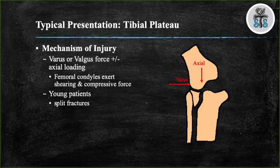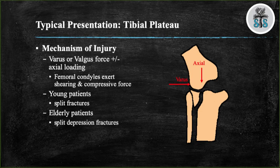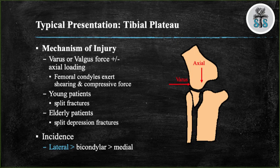Younger patients will most commonly have an isolated tibial split fracture, as their cancellous bone is hard and able to withstand the compressive forces from the femoral condyle. Younger patients will usually have ligamentous injuries. As people age the tibial bone becomes osteopenic and results in depression of the tibial plateau with or without split. Elderly patients have a lower chance of ligamentous injury. The most common tibial plateau fractures are lateral, followed by bicondylar, and the least common are pure medial tibial plateau fractures.